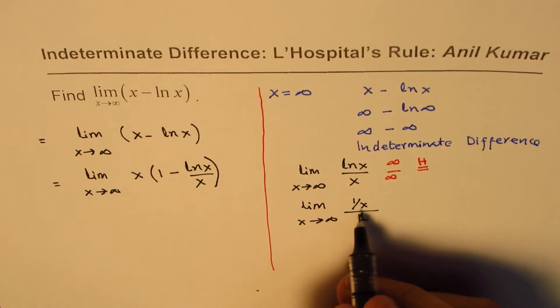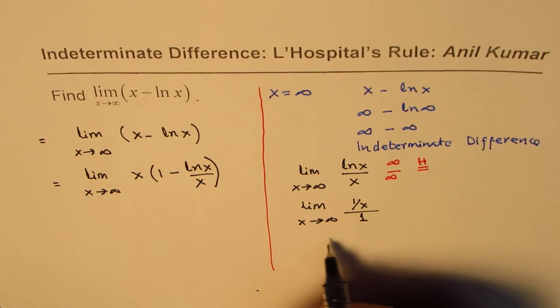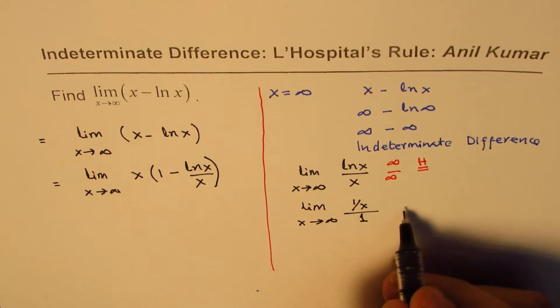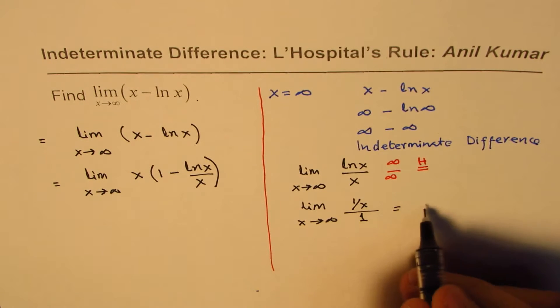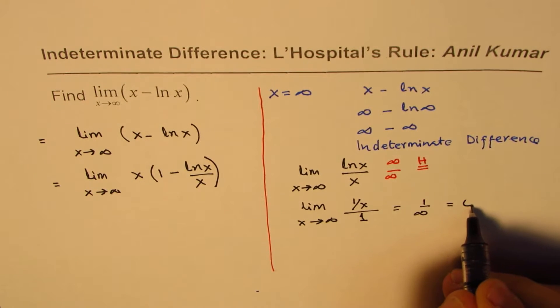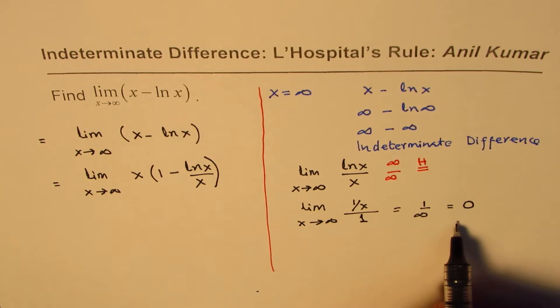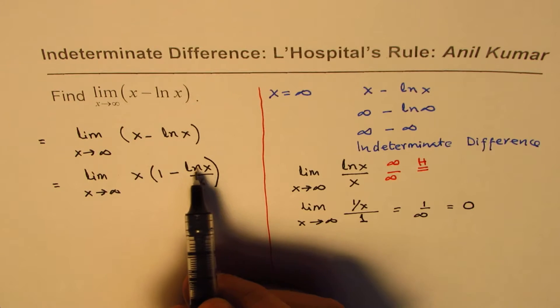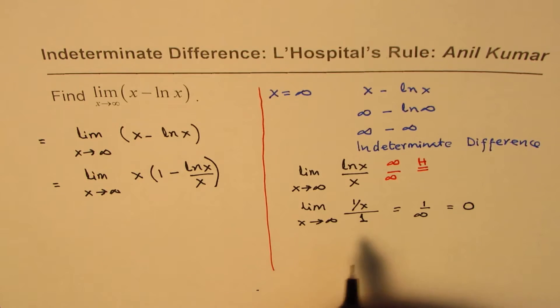In this, if I substitute infinity, 1 over x approaches 1 over infinity, which is 0. So what you observe here is that this part, ln x over x, approaches 0.